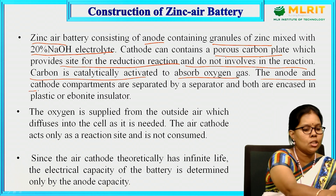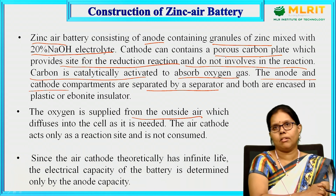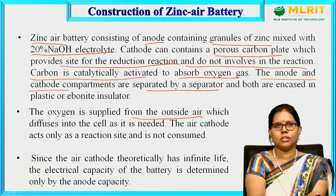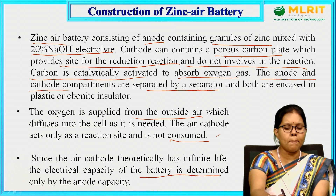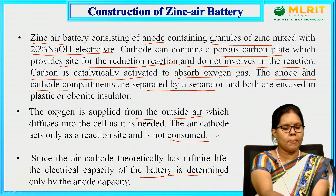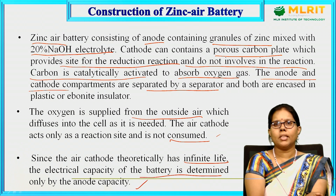The anode and cathode compartments are separated by a separator, and both are encased in a plastic or ebonite insulator. Oxygen from outside air diffuses into the cell as needed. The air cathode only acts as a reaction site and is not consumed, so it theoretically has infinite life. Therefore, the electrical capacity of the battery is completely determined by the anodic capacity.